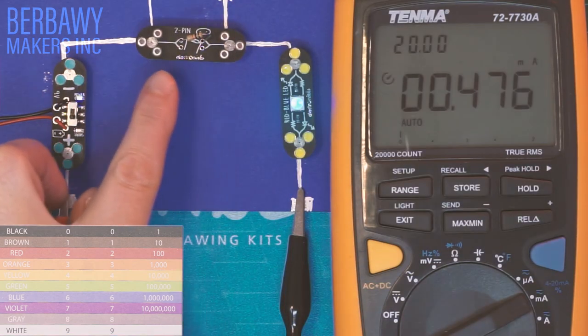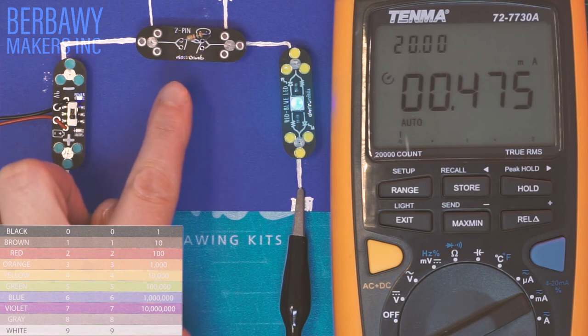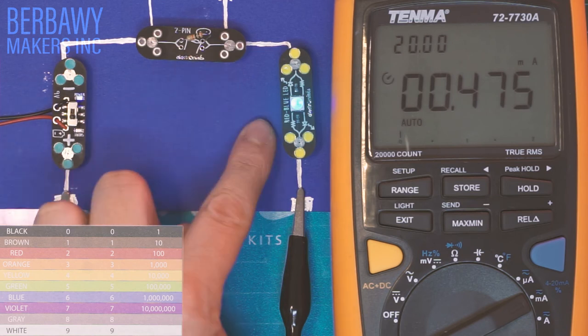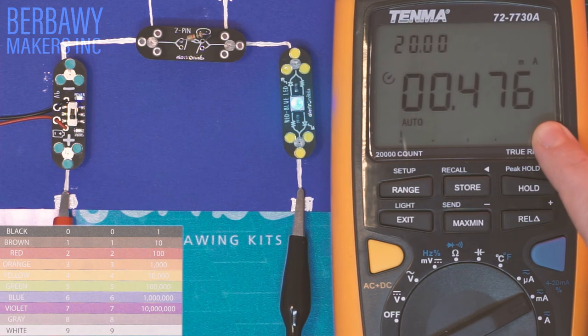As we move down through our resistors, this one is brown, black, orange, which is 10,000 ohms. Our LED is a little dimmer, and our current is 0.47 milliamps.